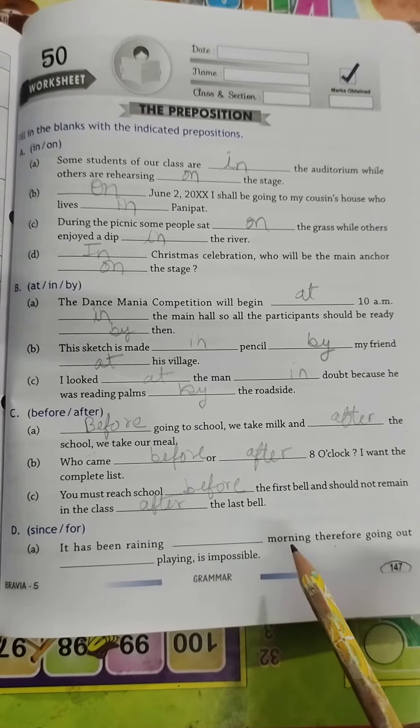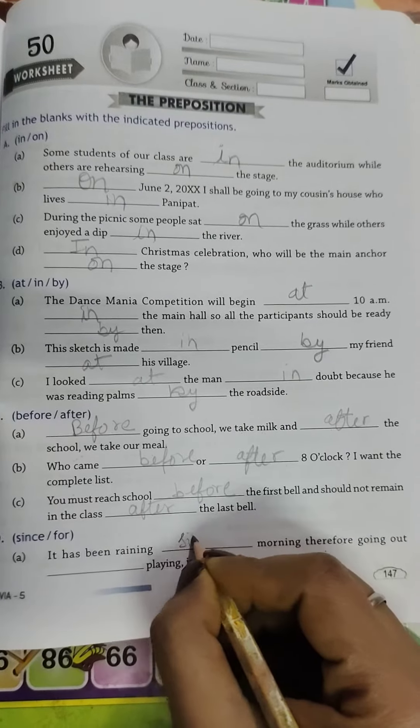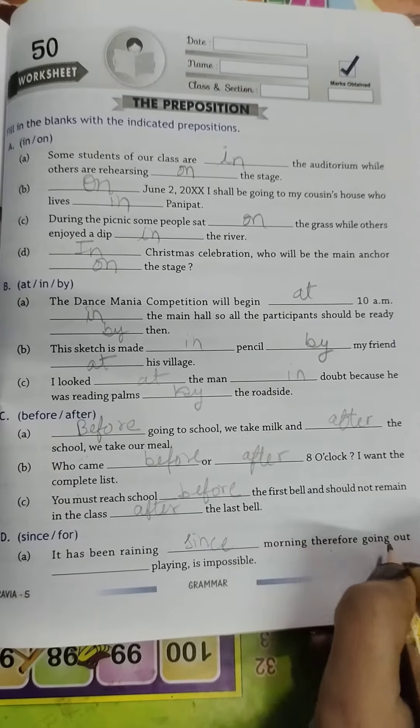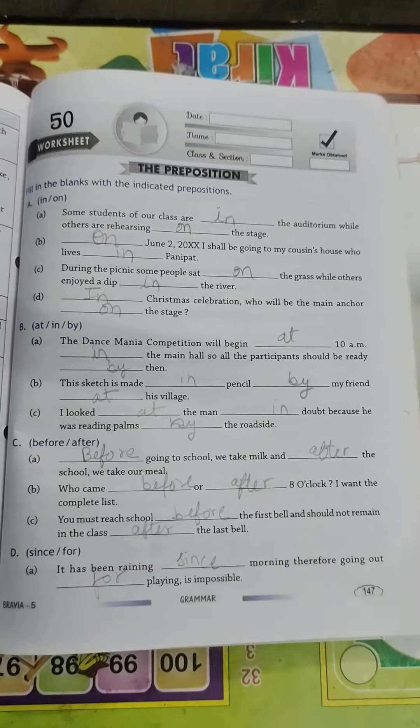It has been raining dash morning. Yes, it has been raining since morning. Therefore, going out for playing is impossible.